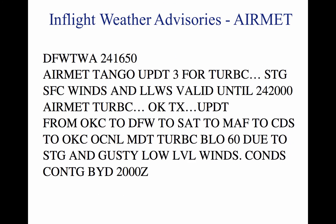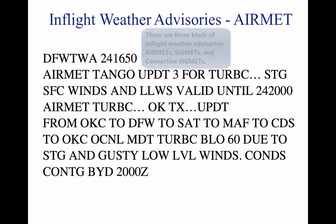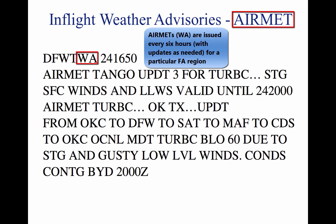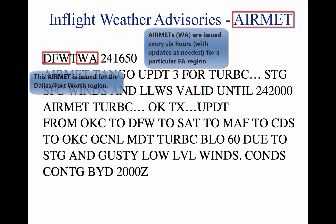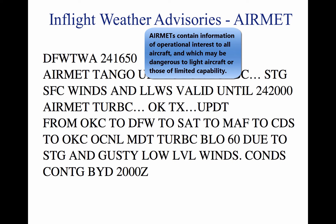In-flight weather advisories, which are provided to en route aircraft, are forecasts that detail potentially hazardous weather. An in-flight weather advisory is issued in the form of either an AIRMET, SIGMET, or convective SIGMET. AIRMETs (WAs) are examples of in-flight weather advisories issued every six hours with intermediate updates as needed for a particular area forecast region. The information in an AIRMET is of operational interest to all aircraft, but the weather section concerns phenomena considered potentially hazardous to light aircraft and aircraft with limited operational capabilities.